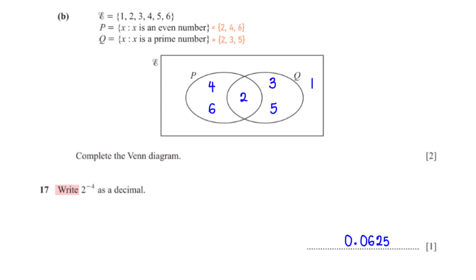Write 2 raised to the power negative 4 as a decimal. When we type 2 raised to the power negative 4 into the calculator, we get its decimal form to be 0.0625.